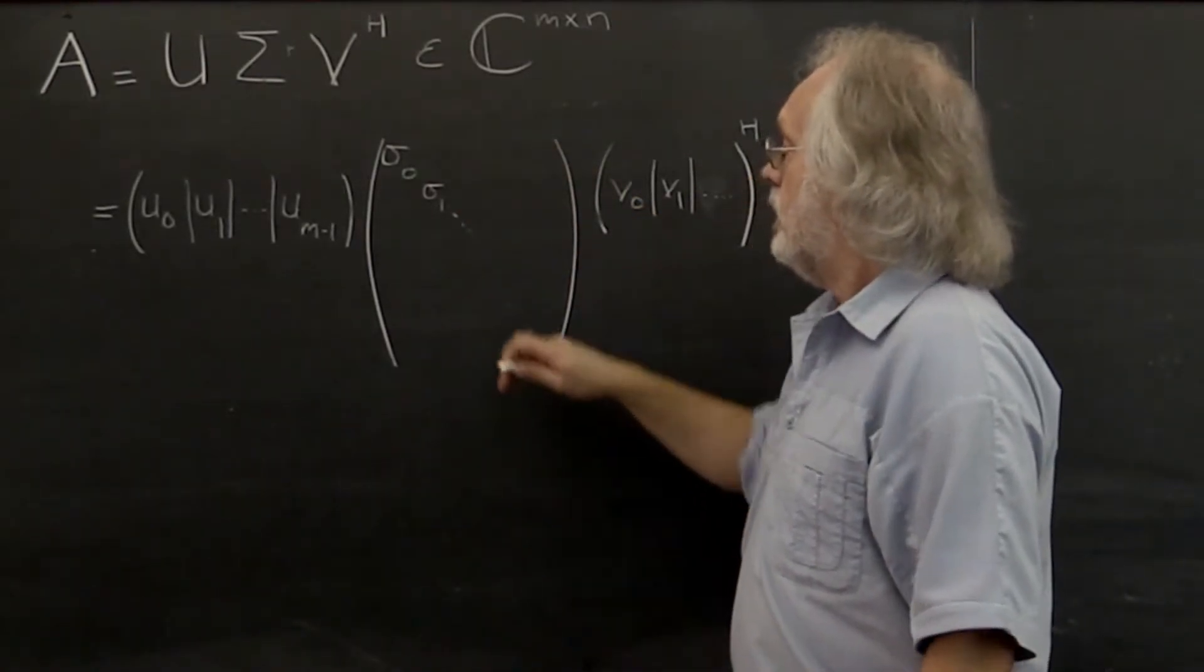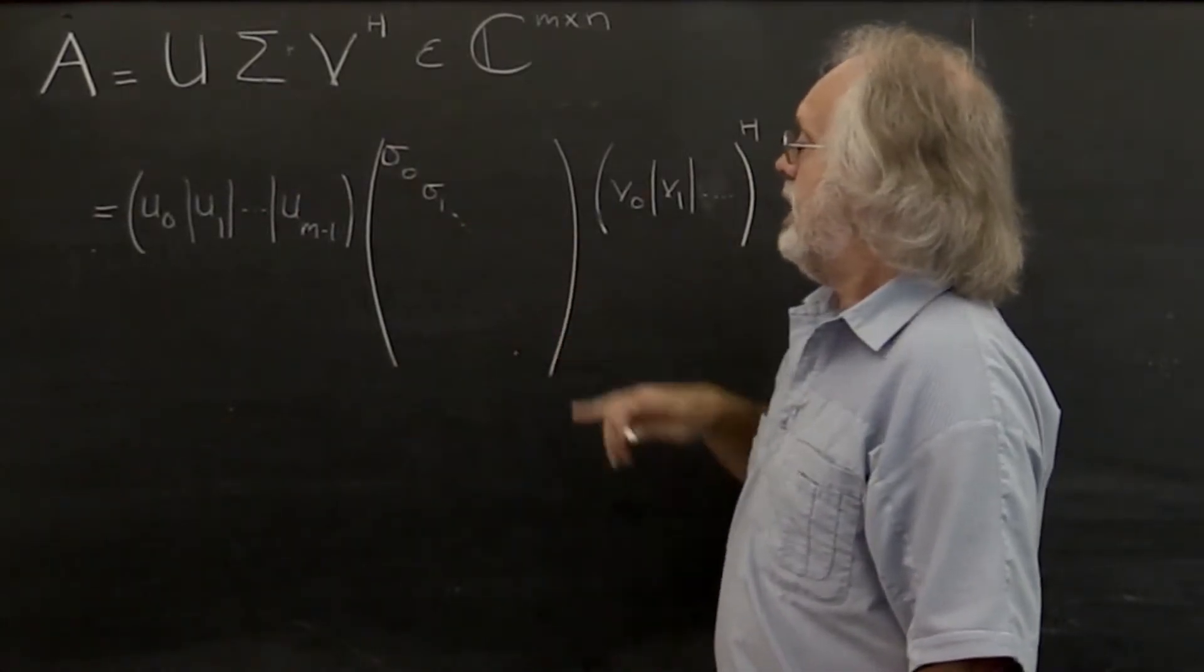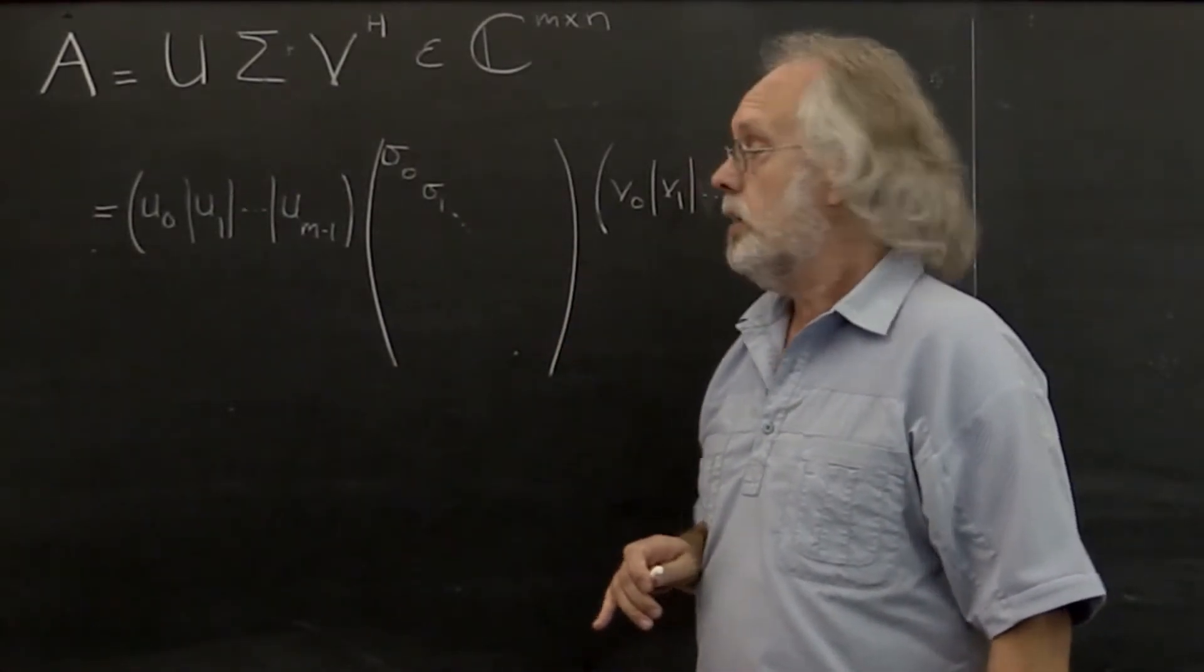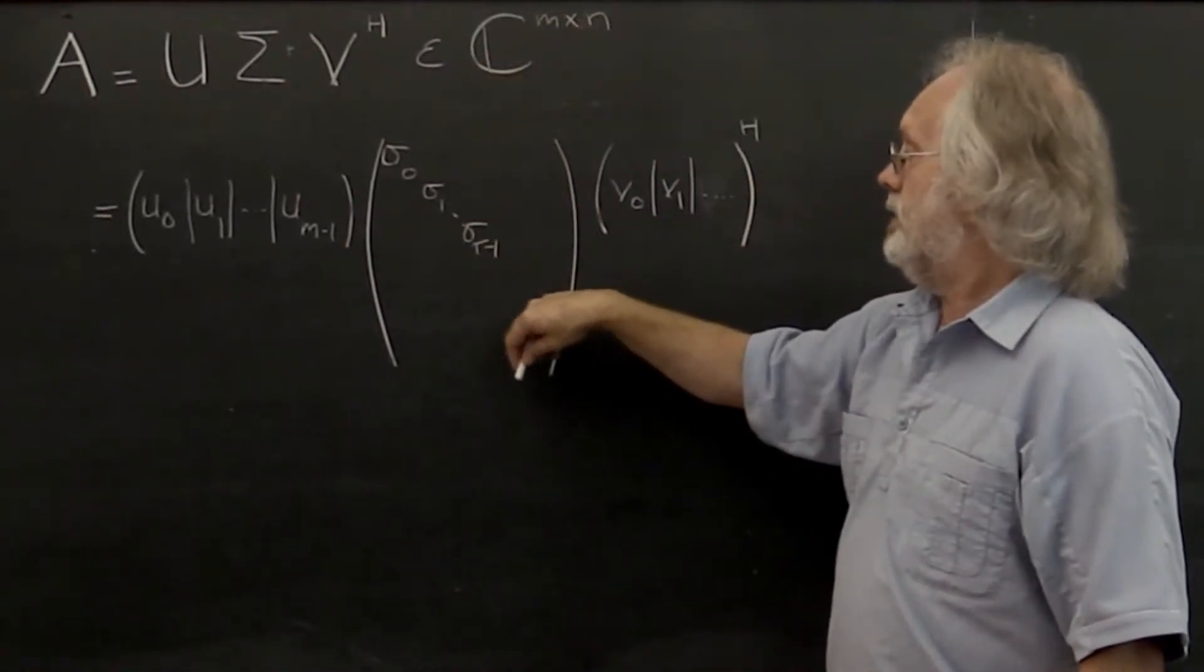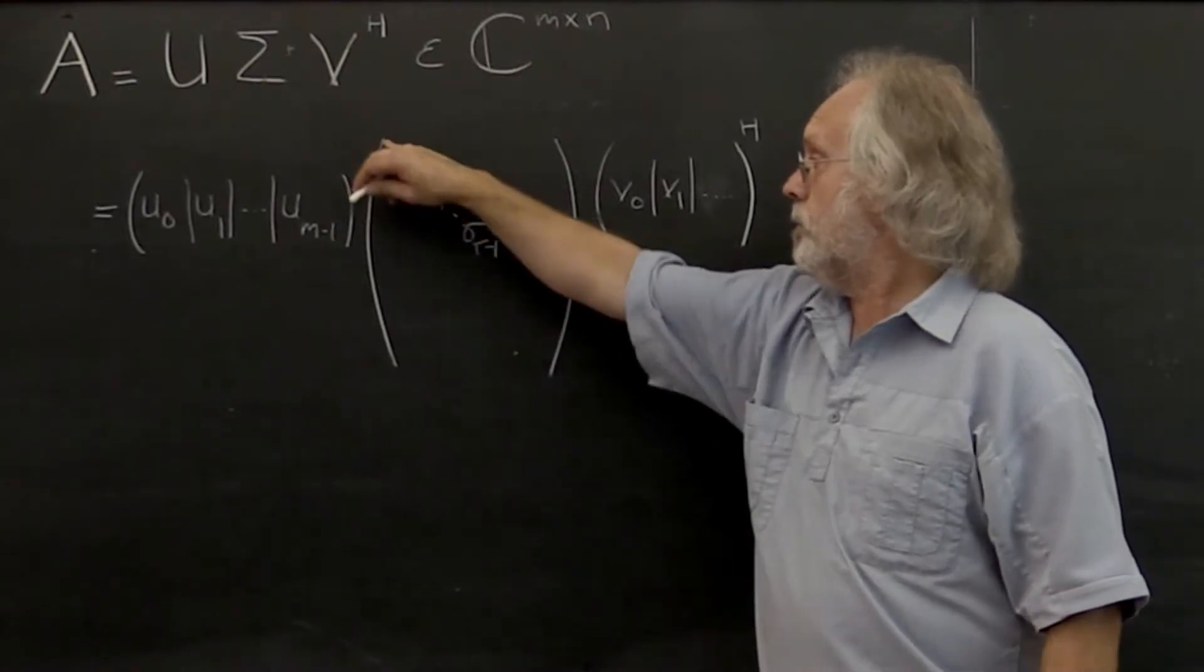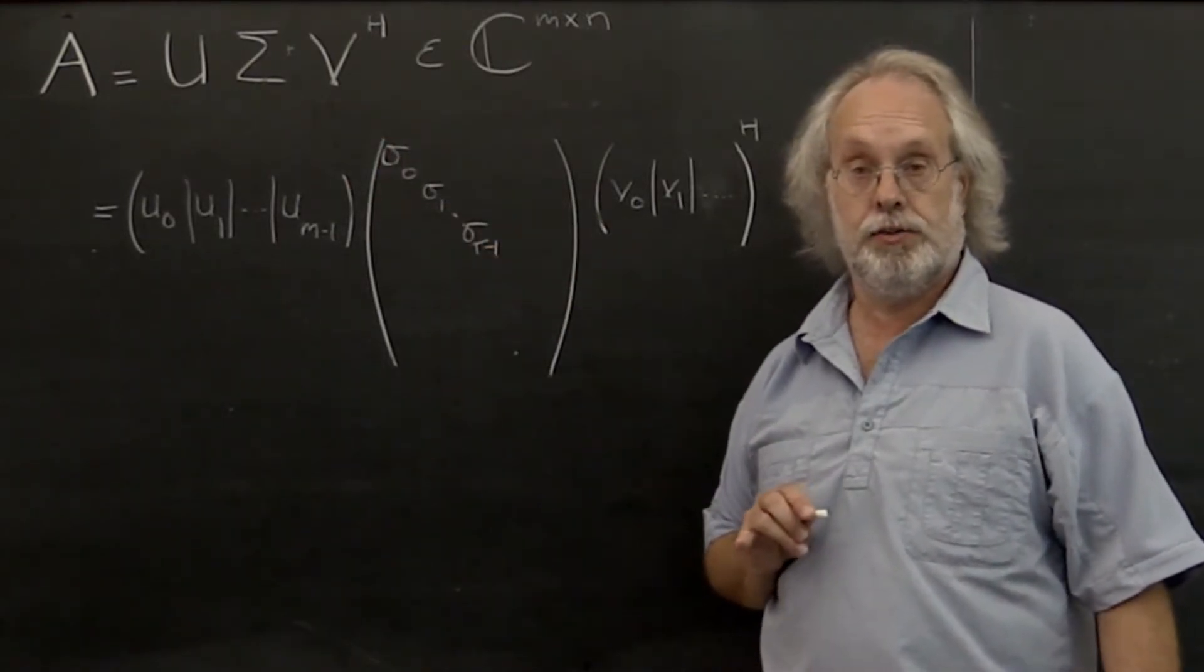If a whole bunch of these diagonal elements are equal to zero, then the rank of the matrix is equal to the number of nonzero singular values on the diagonal.